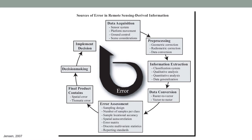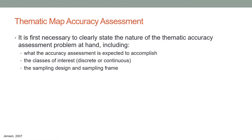A good remote sensing scientist needs to keep their eye on errors, quantify them as much as possible, and give decision makers an idea of how accurate and reliable the product is. To begin with, it is necessary to clearly state the nature of the thematic accuracy assessment problem — including what the accuracy assessment is expected to accomplish, what the classes of interest are, whether they are discrete or continuous, and the sampling design and sampling frame to be used.